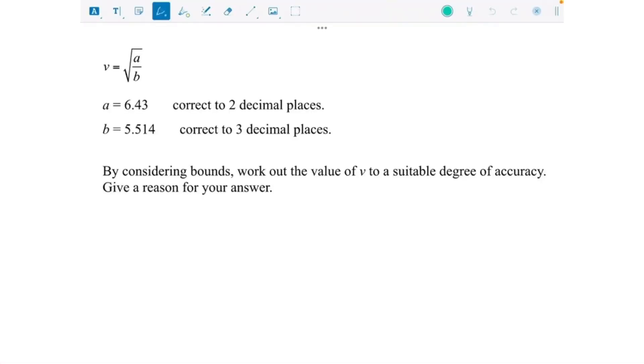This is a fairly tricky bounds question, the sort you would expect to see near the end of the higher GCSE paper. Bounds is essentially when numbers have been rounded by someone else. We don't know what the original numbers were, but we're going to determine the biggest and smallest they could have been and work off those values.